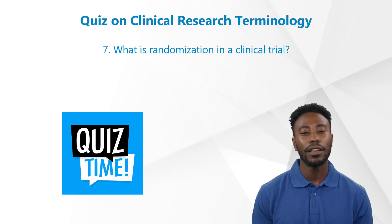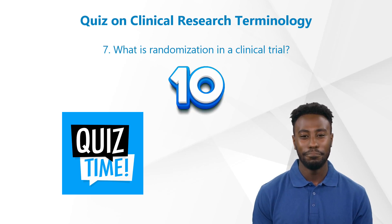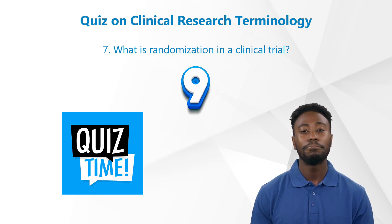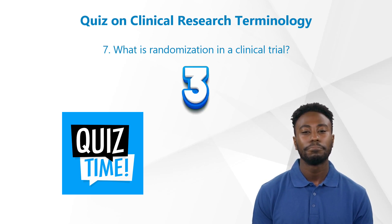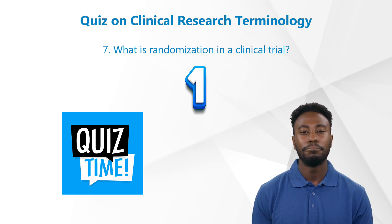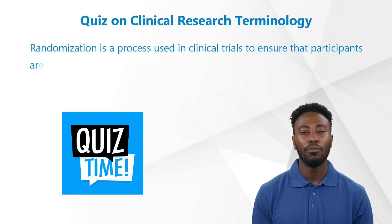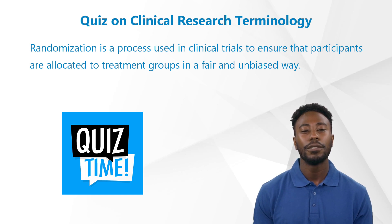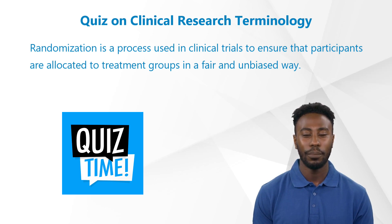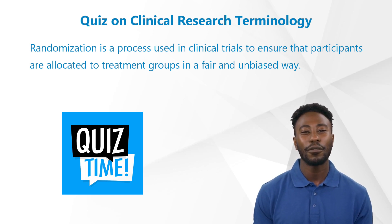Question 7: What is randomization in a clinical trial? Randomization is a process used in clinical trials to ensure that participants are allocated to treatment groups in a fair and unbiased way. It helps to reduce bias, eliminate selection bias, and ensure the reliability of the results.